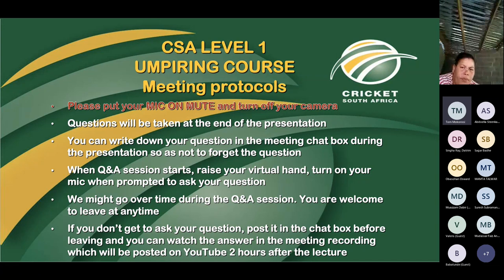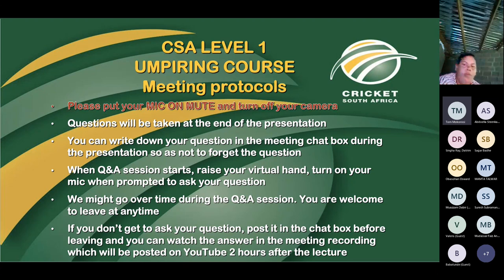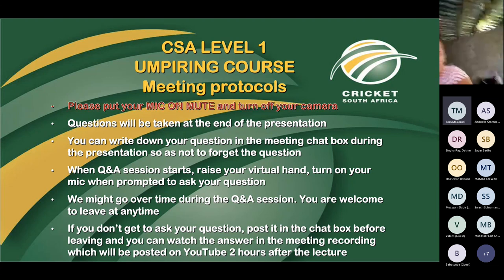We are not going to go through Laws 41 and 42. Law 41 is unfair play and Law 42 is player conduct. Those two laws are governed very differently from one association to the next and the playing conditions are prevalent in those two laws. We will cover them in Level Two and Level Three. For the purposes of the Level One umpiring course, we shall not be covering them.